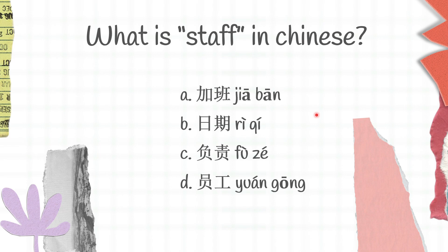Jia ban is to work overtime, re qi is date, wu zhi is responsible, yuang gung is staff. And 'staff' in Chinese is d, yuang gung.